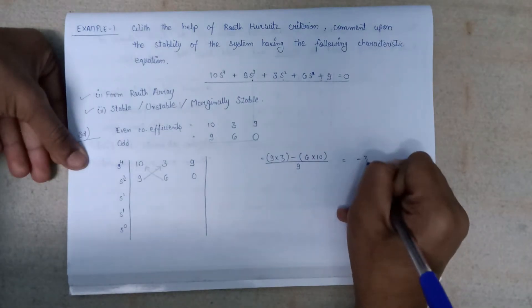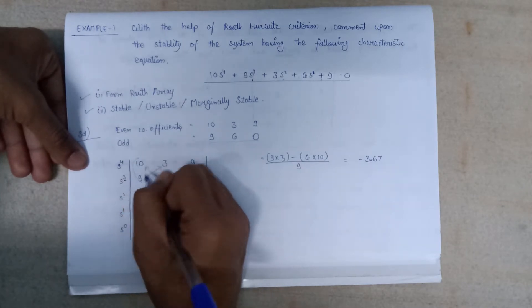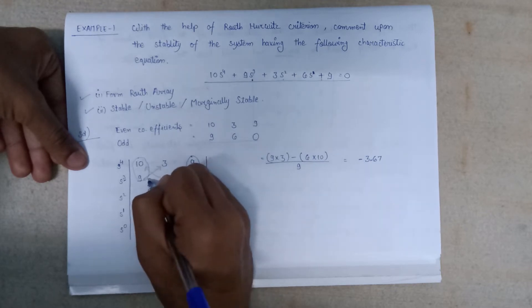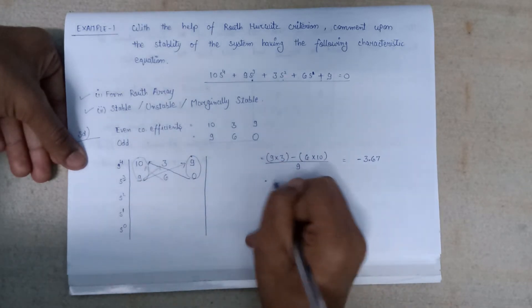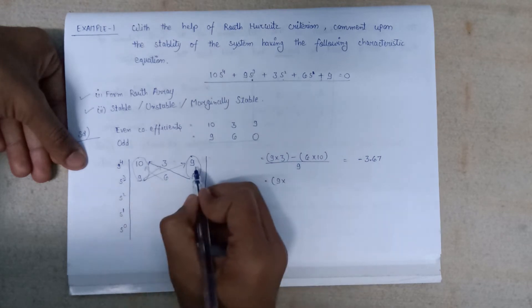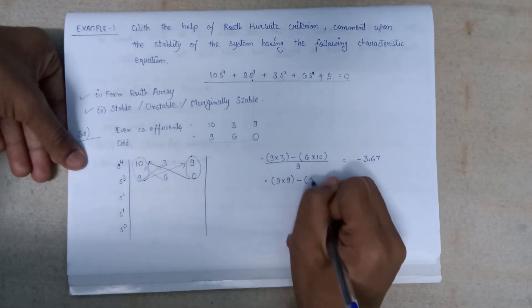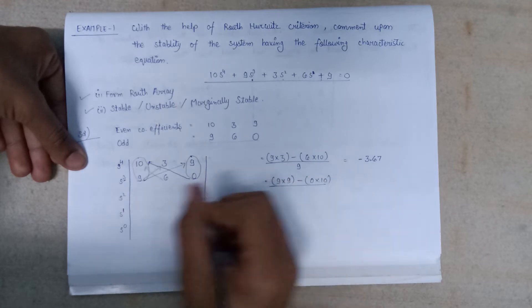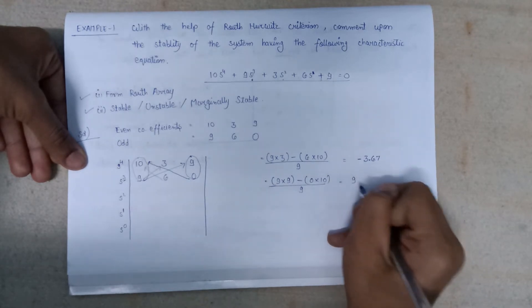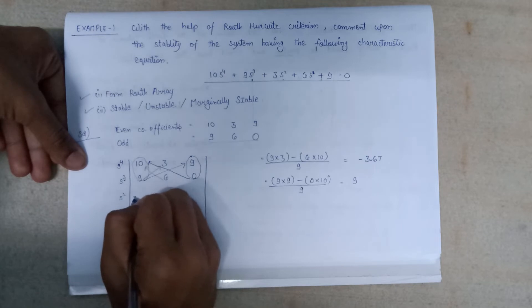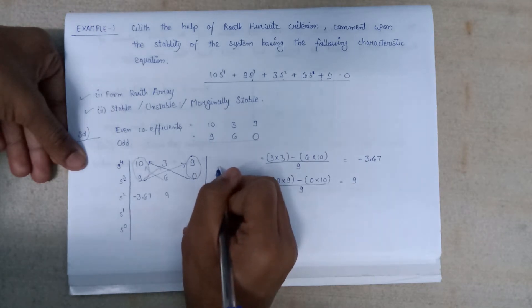After solving this expression we get minus 3.67. After this, 9 will be multiplied with 9 and 0 will be multiplied with 10, and the whole result will be divided by 9, giving us 9.